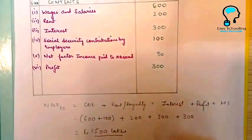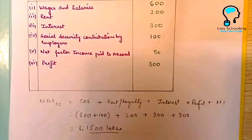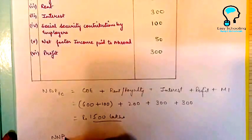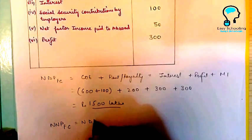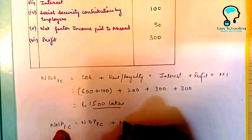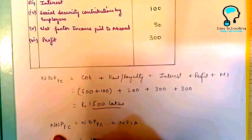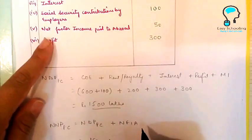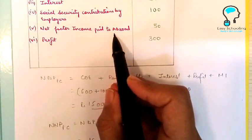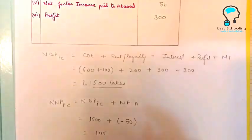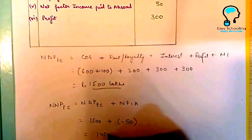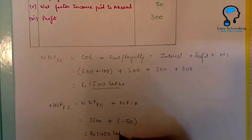Always remember to write units in your exam. From NDP FC, we calculate NNP FC by moving from domestic product to national product, so we add net factor income from abroad. NDP FC is 1500. In the question, net factor income paid to abroad is given — since it is paid abroad, we subtract it. Net factor income paid abroad is subtracted; net factor income from abroad is added. So NNP FC comes to 1450 lakhs.